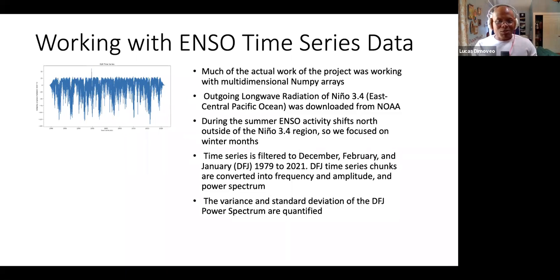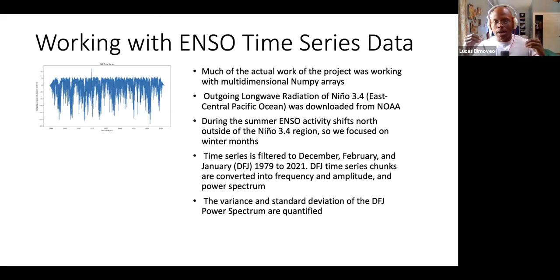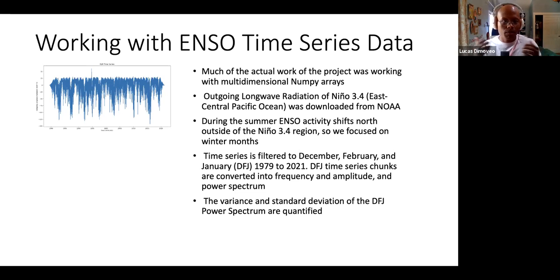The methods of this project involved a lot of working with multidimensional datetime arrays. We looked at a patch of the Pacific Ocean called Nino 3.4, in the east-central region of the Pacific Ocean. The reason we didn't analyze the whole time series is that during the summer months, activity tends to shift a little bit north, outside of our rectangle. Also, seasons carry variation with them, and we wanted to remove seasonal variation to focus in on anomalous data. So we took these 90-day chunks of winter for every year from 1978 to 2020.